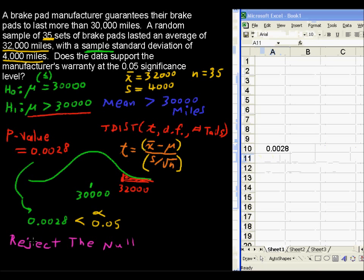And so, in conclusion, that's our decision, reject the null. So, in conclusion, evidence suggests, this is all the proper way to say this, evidence suggests that the mean is greater than 30,000 miles, or that the brakes last, on average, longer than 30,000 miles.